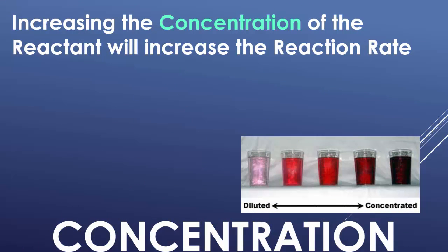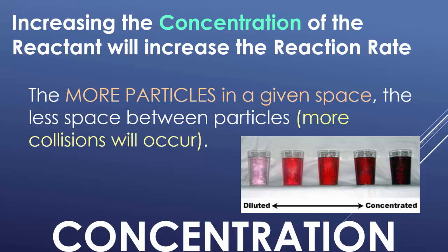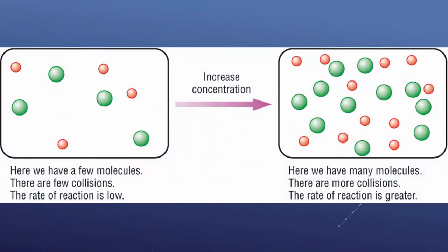Increasing the concentration of any reactant will increase the reaction rate, because more particles in a given space means less space between those particles, causing more collisions — more collisions means a faster rate of reaction. Think about flavor: a very dilute soda or juice, you really don't taste the molecules responsible for the flavor. But with a very concentrated amount, you can really taste the chemicals. On the left of the diagram, there are fewer reactive molecules with more space between them — less collisions. On the right, more reactants are added, less space, more collisions, faster reaction.